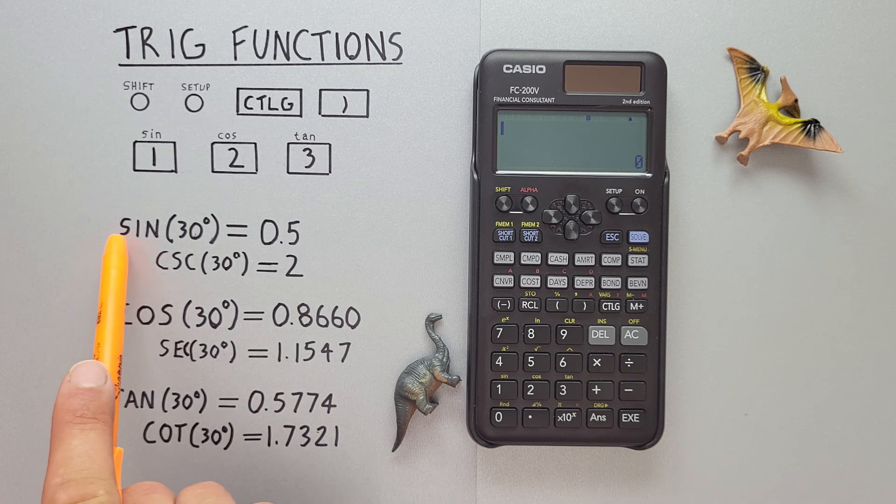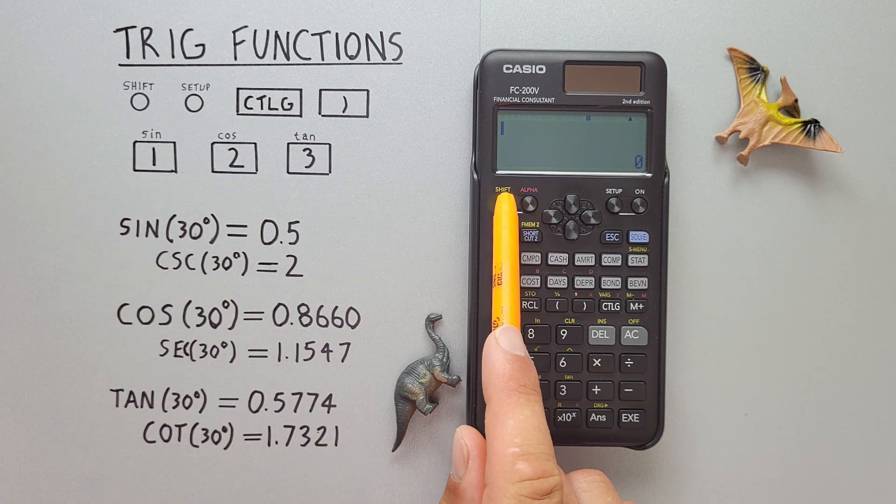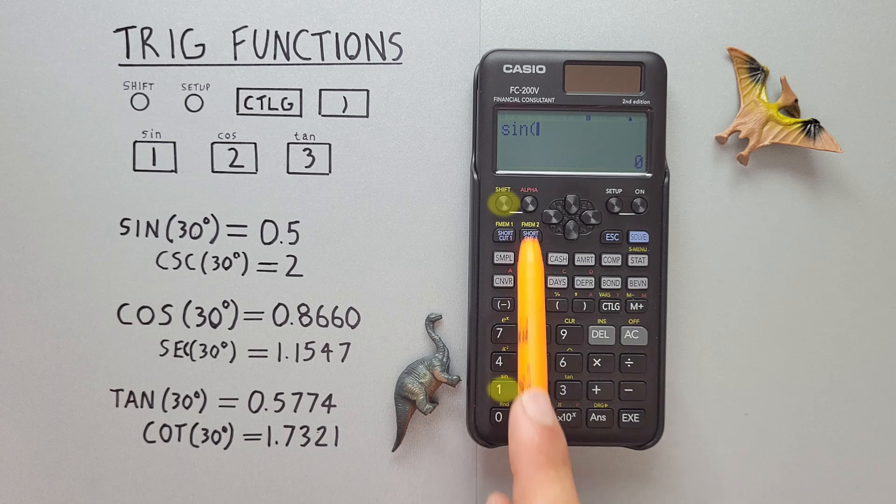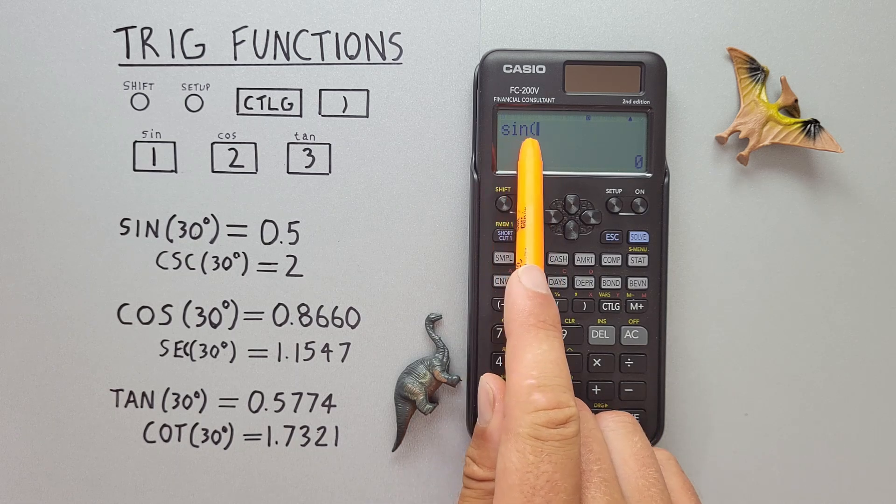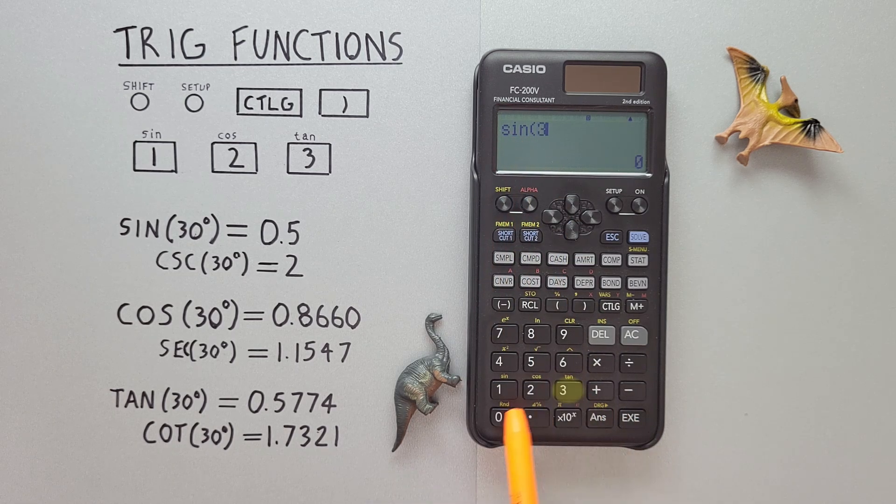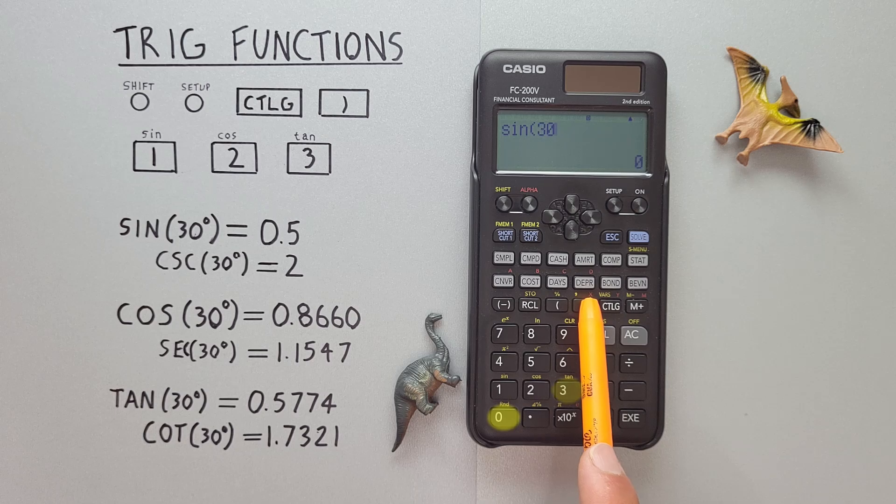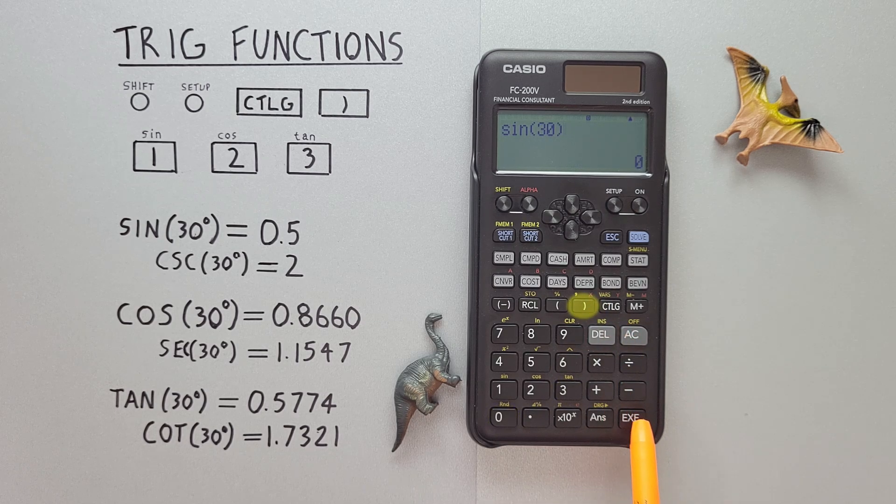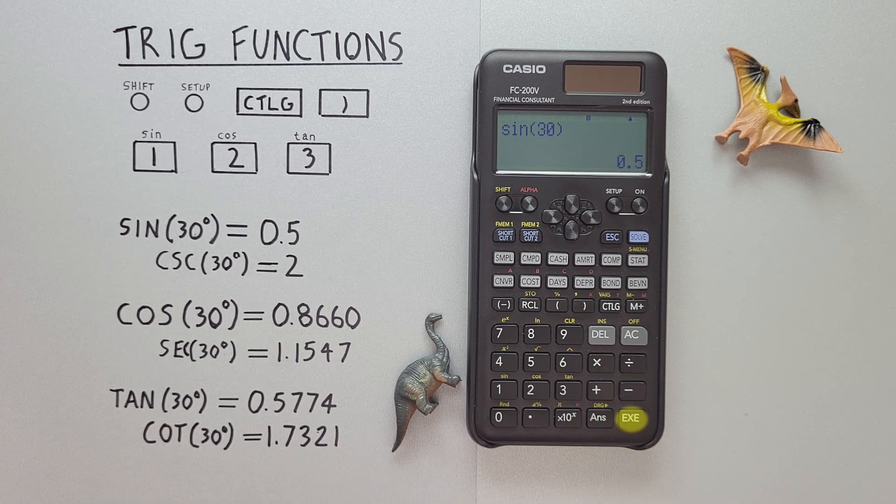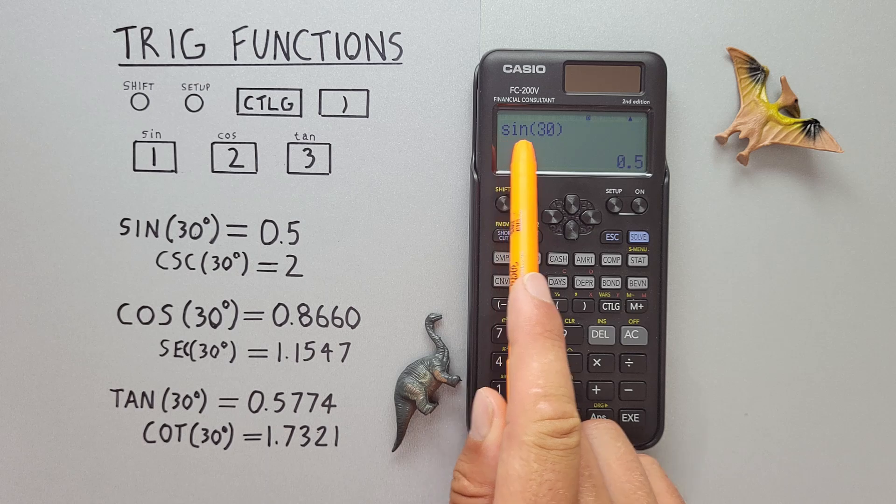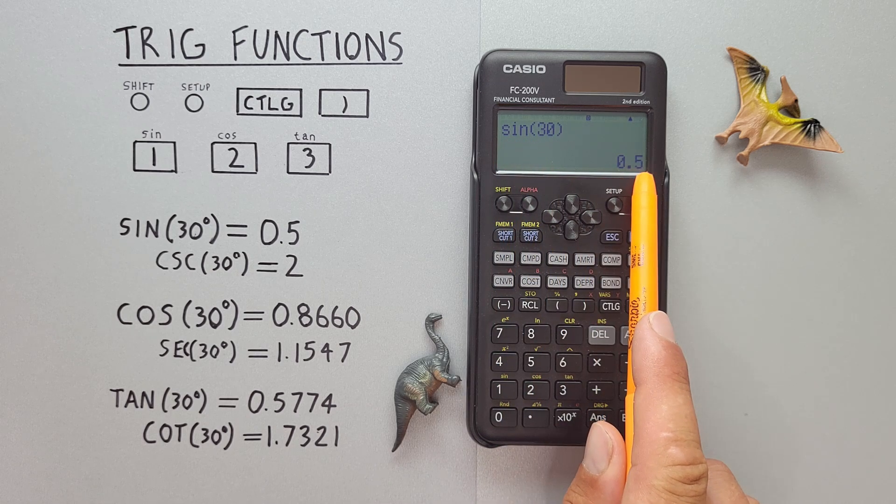For sine of 30 degrees, we press shift one to get sine on our screen, and then 30, close our bracket, and hit exe. And we see we get sine of 30 degrees is equal to 0.5.